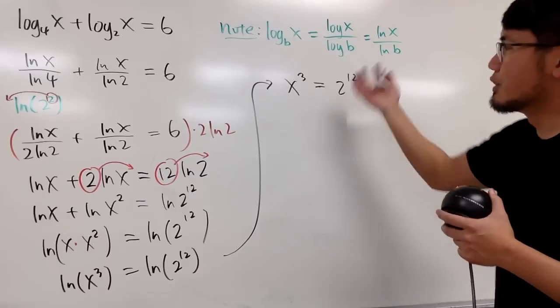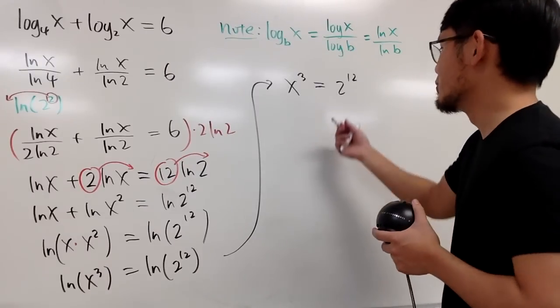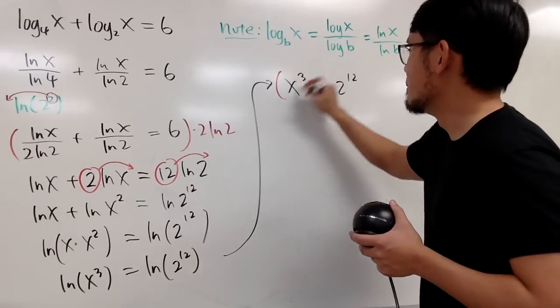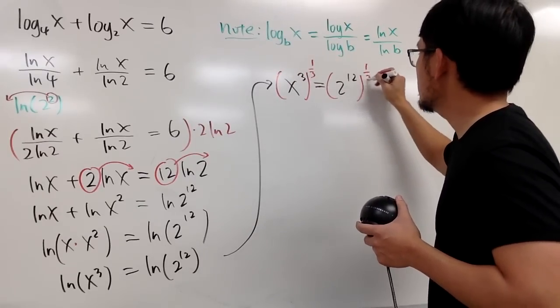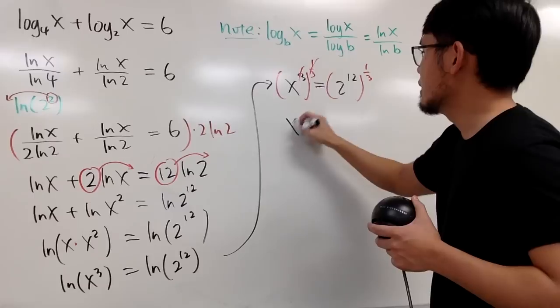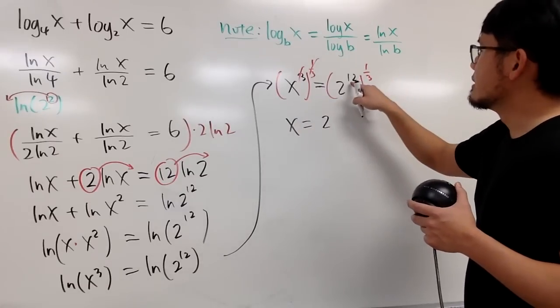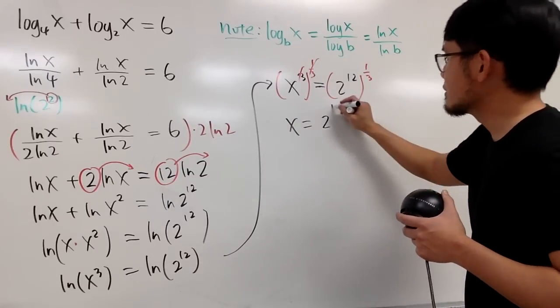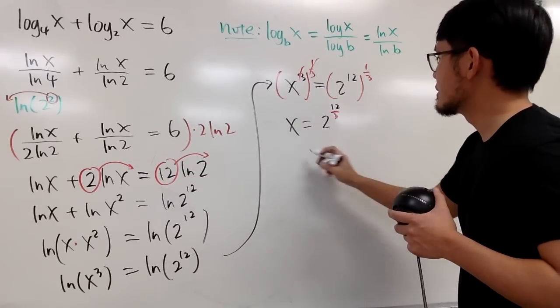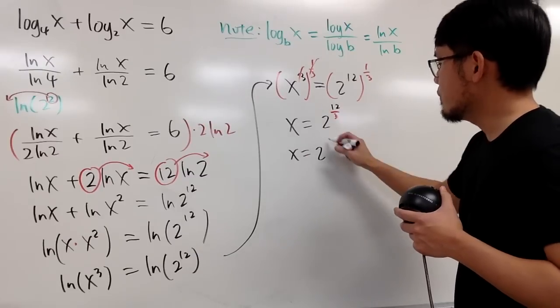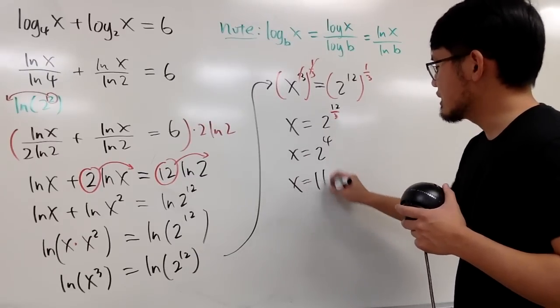And you can just now take the cube root to both sides, or maybe raise both sides to the 1/3 power. Perhaps this is more legit, so that this will cancel, and you get x is equal to 2 to the 12 times 1/3, which is x equals 2 to the 4th power, which is 16.